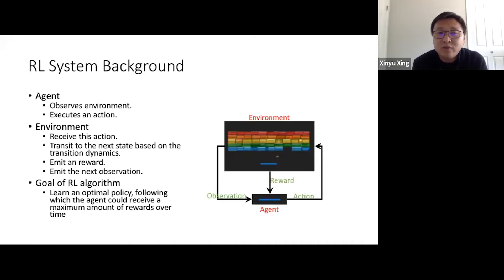For those who are not familiar with reinforcement learning, reinforcement learning contains two components: an agent and an environment. The agent observes the environment and takes corresponding actions, whereas the environment receives the agent's action and transitions its current state to the next state. At the same time, the environment will release the reward to award the agent accordingly. The goal of reinforcement learning algorithm is to learn an optimal policy. Using that optimal policy, the agent should be able to receive the maximum amount of reward over time from the environment.